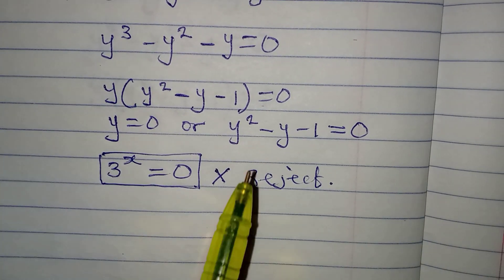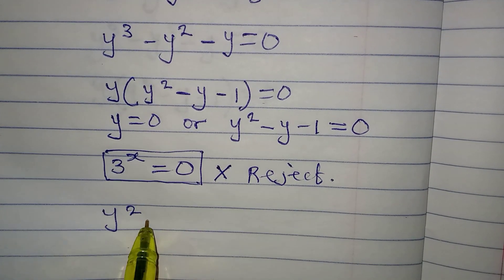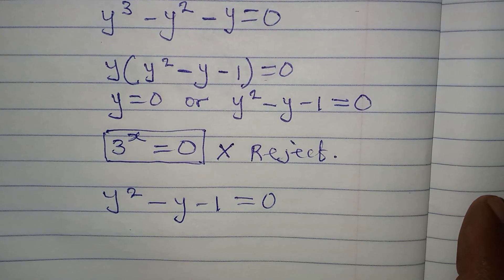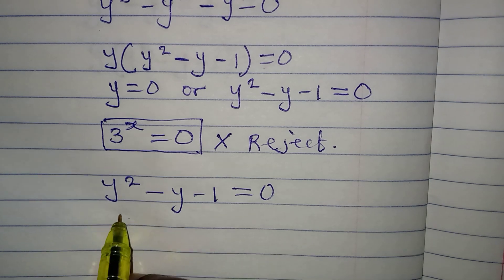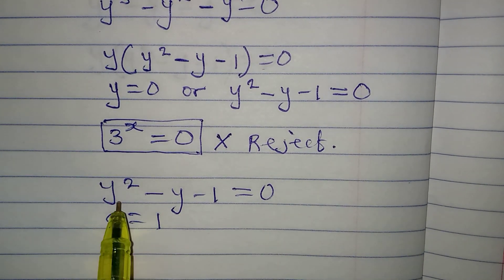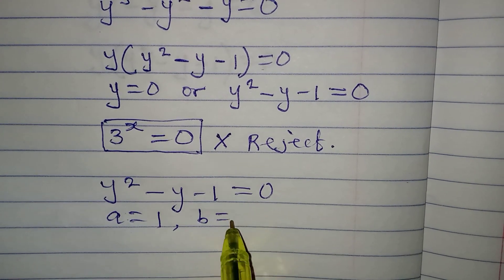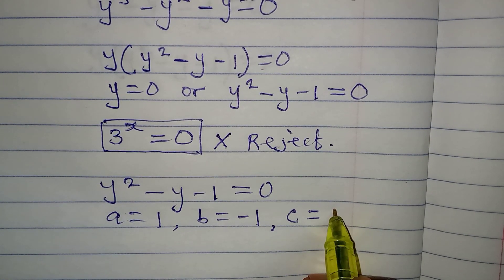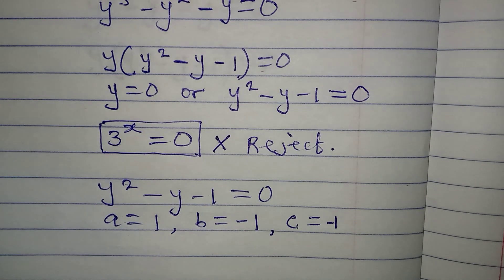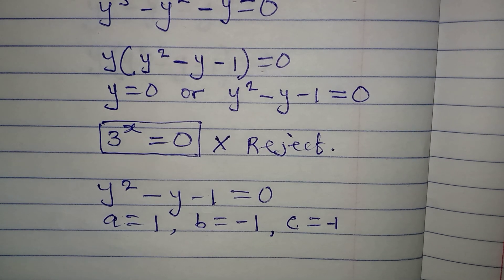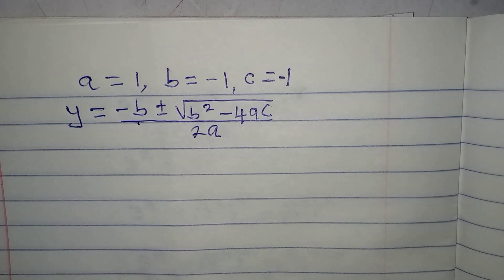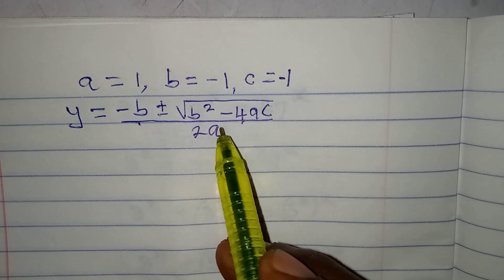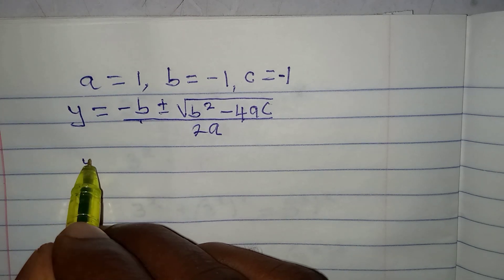Let's go back to the quadratic equation: y squared minus y minus 1 equals 0. We apply the quadratic formula. Here a is 1 (coefficient of y squared), b is minus 1 (coefficient of y), and c is minus 1 (the constant term). The quadratic general formula is: y equals minus b plus or minus square root of (b squared minus 4ac), all over 2a.